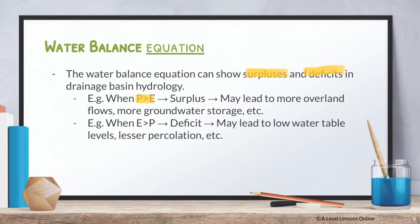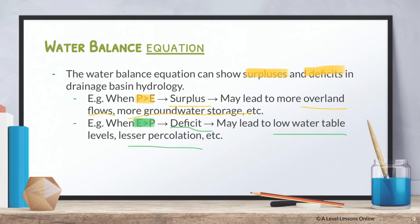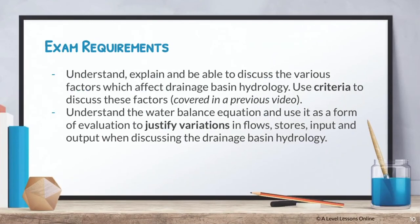The water balance can show surpluses or deficits. When P is greater than E — precipitation greater than evapotranspiration — this leads to a surplus of water in the drainage basin, more overland flow, and greater groundwater storage. When E is greater than P, there is a water deficit, leading to a lower water table and lesser percolation, infiltration, and everything inside the drainage basin hydrology.